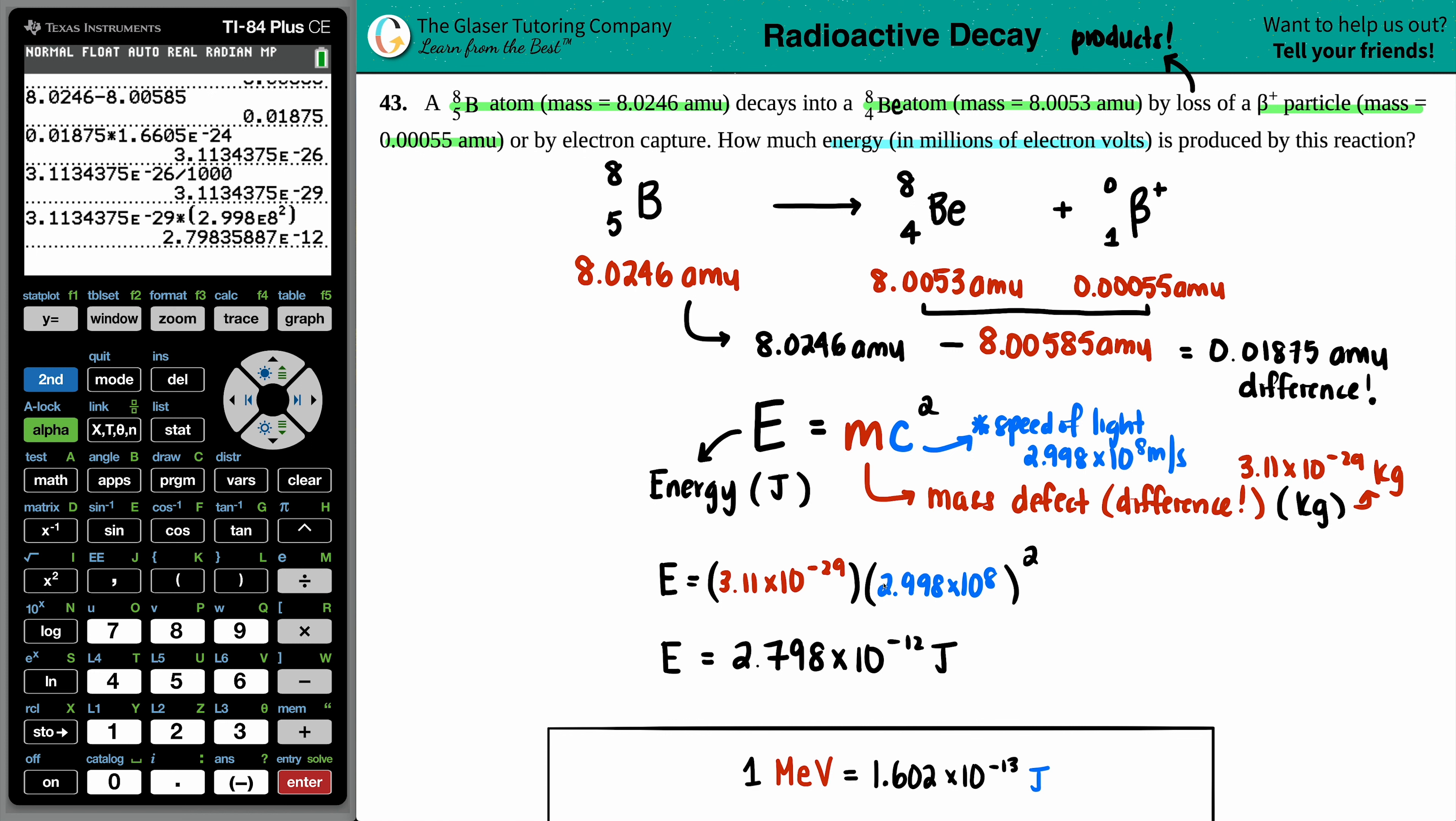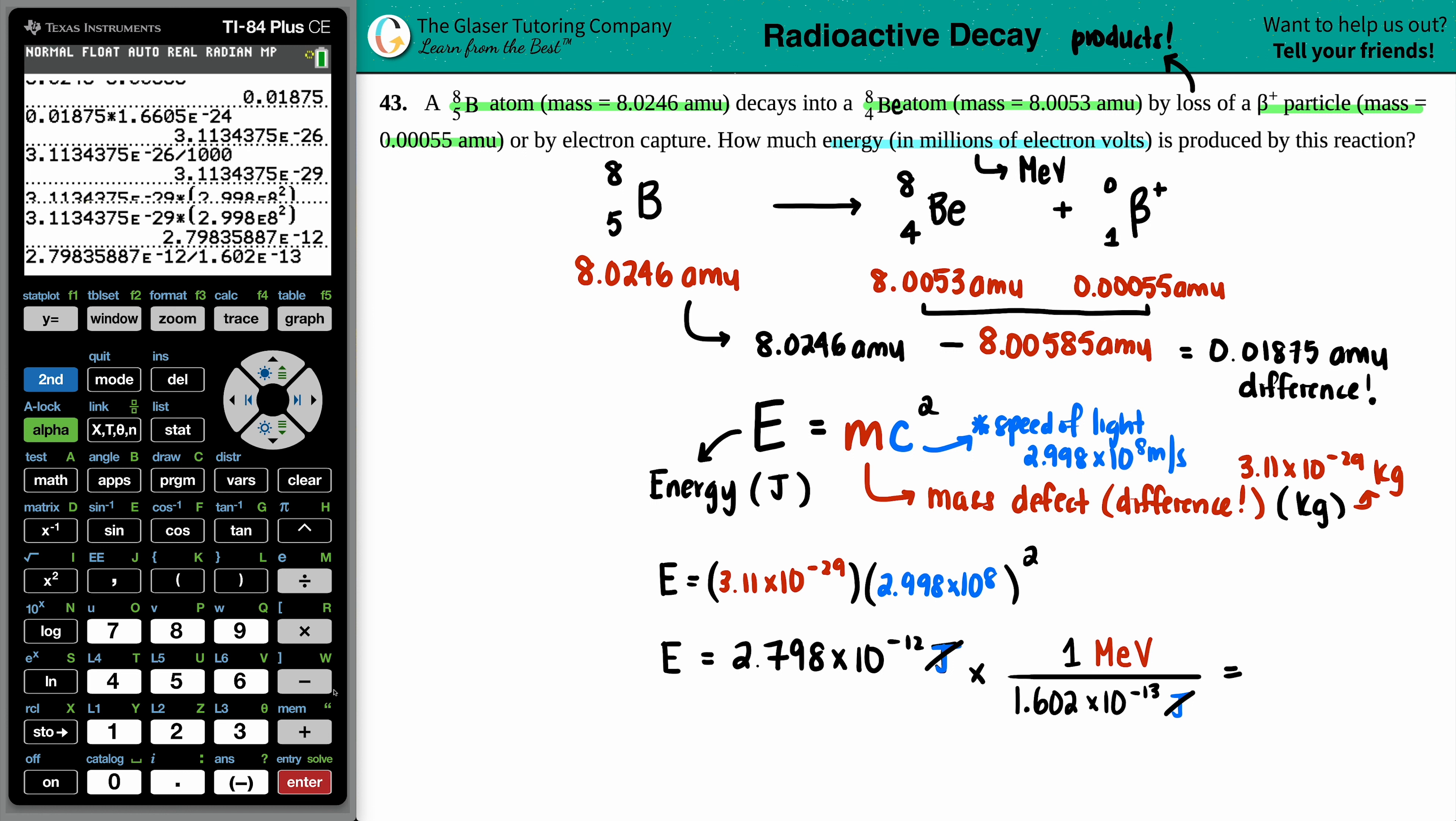2.798 times 10 to the negative 12th joules. But remember, the question's asking for millions of electron volts. Millions of electron volts are just capital M-E-V, million or mega electron volts. The conversion is 1 million electron volt equals 1.602 times 10 to the negative 13th joules. Joules goes on the bottom with its number, and the million electron volts goes up on the top. I'm going to take the full number, divide it by 1.602 times 10 to the negative 13th. And there you go.